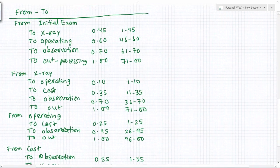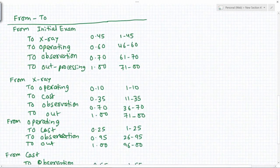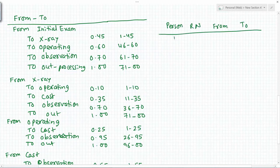This is what is available, so we have converted information available to cumulative probabilities and random number intervals. Now for simulating, we can make this table. We can say first person, so if you take the first patient and if you look at the random number table, we have 52. So this 52 means the patient will go to operating room.